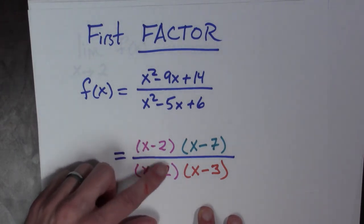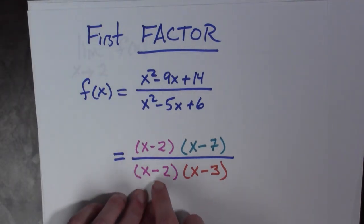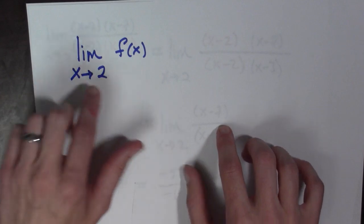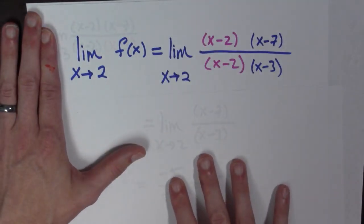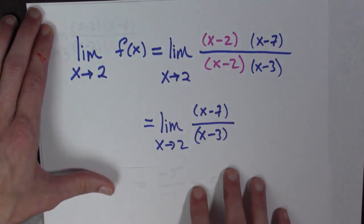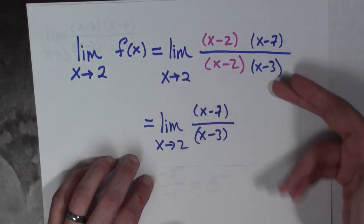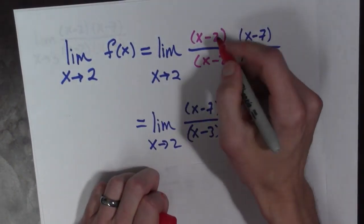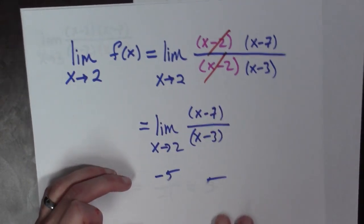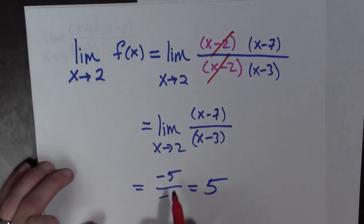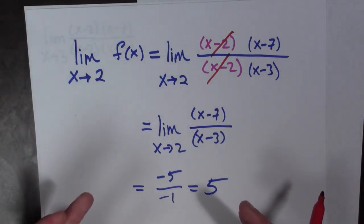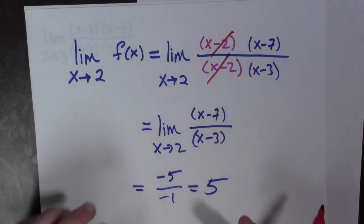There's an indication that something interesting is going on. There's a zero in the denominator when x equals 2. Taking the limit as x goes to 2 of x minus 2 times x minus 7, all over x minus 2 times x minus 3 — because we're taking the limit, we're assuming x is not equal to 2, so we can cancel those terms. We get the limit as x goes to 2 of x minus 7 over x minus 3, which equals negative 5 over negative 1, which equals 5. So we do not have a vertical asymptote at x equals 2.